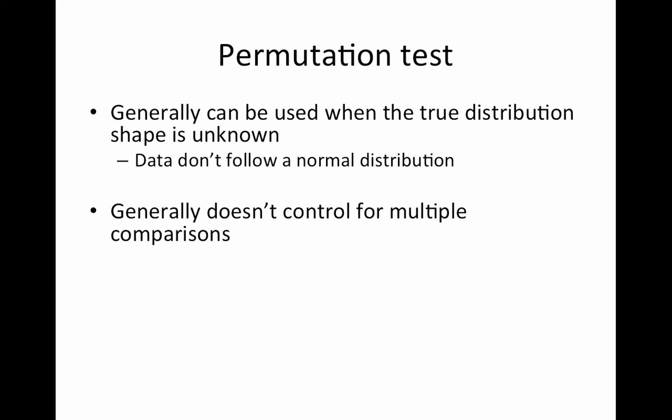Generally it doesn't control for multiple comparisons only if you use it with a max distribution, which we won't do today but we will do next time. So remember permutation tests, they aren't a magic fix for multiple comparisons unless we're using it with the appropriate statistic. And they're actually limited in how much they can fix distributional assumptions. So it can do weird with wonky looking distributions but if you have heteroscedasticity for example with really huge outliers, the permutation test isn't really going to fix that.